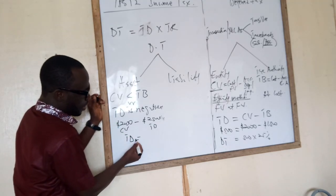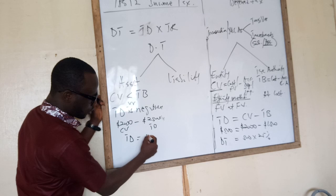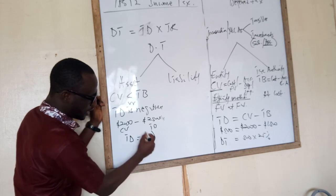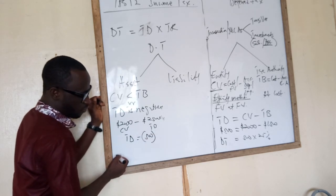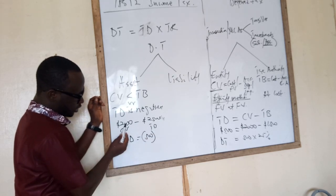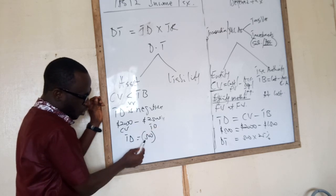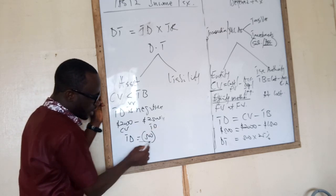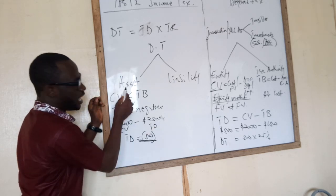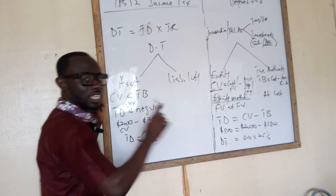The temporary difference is going to be 500. As you can see, this is negative — because this value is less than the other. So we are saying that if the temporary difference is negative, it leads you to a deferred tax asset.